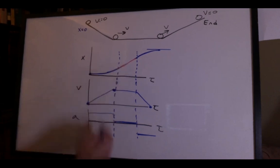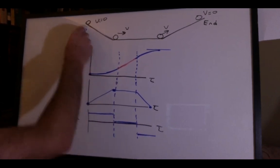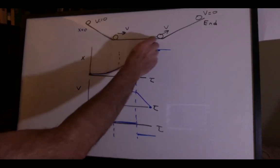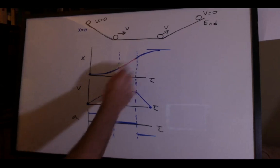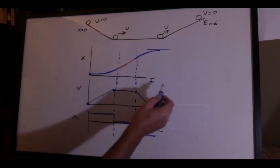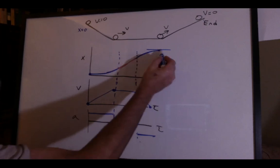What does that mean for the problem? Positive acceleration for a ball at rest would mean it speeds up. Zero acceleration means the velocity stays the same. And the negative acceleration means it's slowing down. And that agrees with this graph, leveling off, and the ball going uphill and stopping.